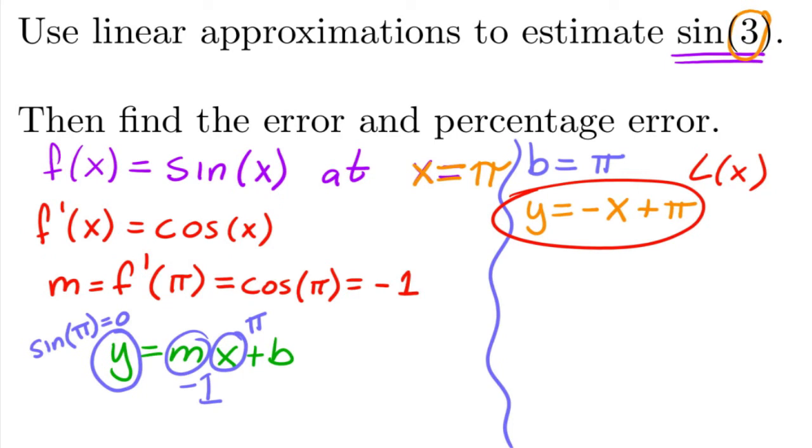Okay, so now we can approximate sine of 3. Sine of 3 is approximately equal to plugging 3 inside of the tangent line, so it would be minus 3 plus π.